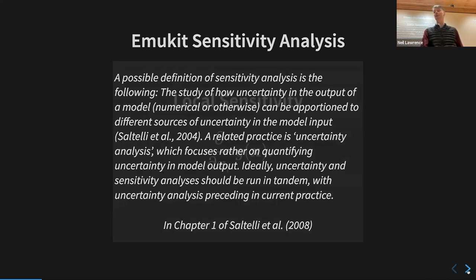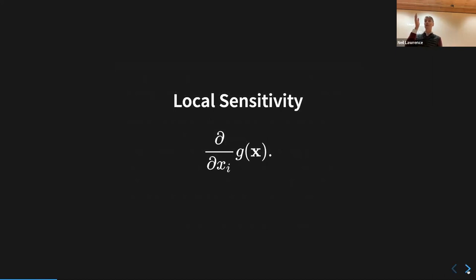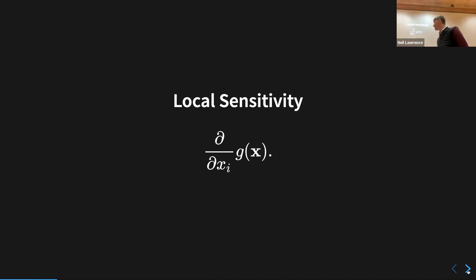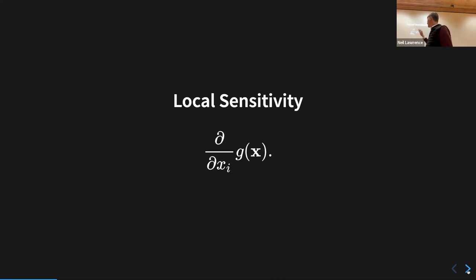You'll see this commonly talked about in machine learning in terms of local sensitivity. In Amazon they used to call this 'bridging' — I've never really worked out whether that term is an econometrics term or Amazon-specific, but I think it's econometrics — where you linearize around an operating point.